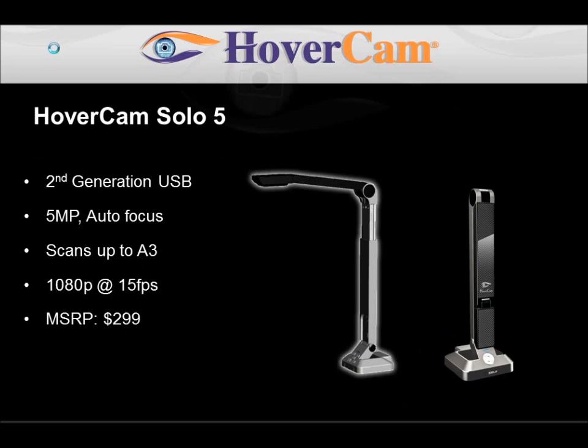The Solo 5 is our second generation USB document camera. It comes with a 5 megapixel image sensor with autofocus lens — twice the clarity of the Hovercam T3. It scans up to A3 sized paper. Classroom presentations can achieve 1080p HD video at 15 frames per second, which is still faster than the T3.